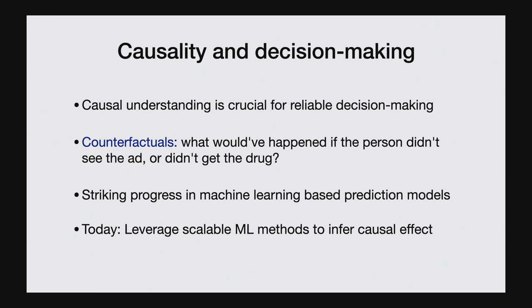The decision-making problems we actually want to solve in practice don't neatly fall into a prediction setup, because we're interested in counterfactuals — what would have happened to this patient had they not taken a drug? If you naively try to use a prediction model, it can lead to all kinds of weird conclusions. For example, if you're studying the relationship between housing demand and rent, a naive prediction model is going to predict high demand whenever rent is high, because this is what you see in big cities. But obviously, this is nonsensical given our basic intuition.